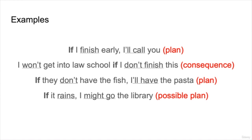Let's look at some meanings. If I finish early, I'll call you — this is a possible plan; I might not finish early, but if I do, I'll call you. I won't get into law school if I don't finish this — this is a consequence, and both clauses are negative. If they don't have the fish, I'll have the pasta — this is an alternative plan. If it rains, I might go to the library — another possible plan using the modal might.